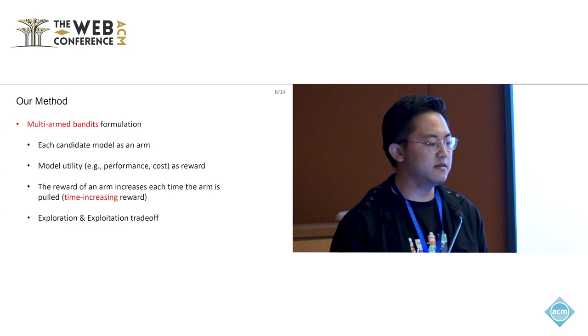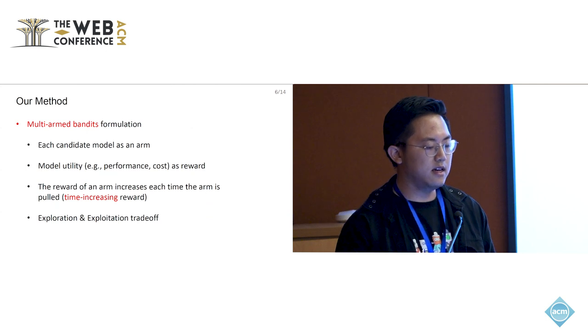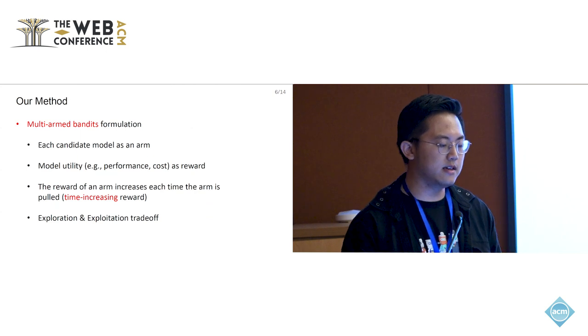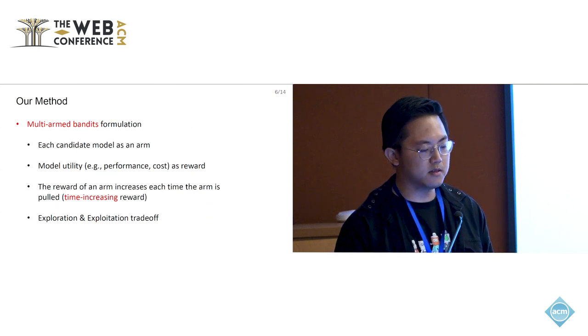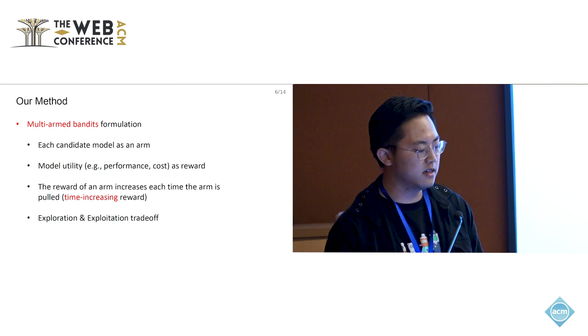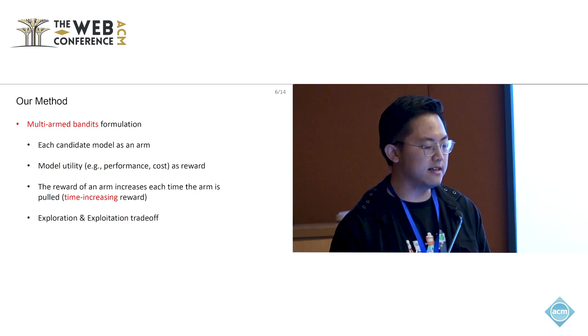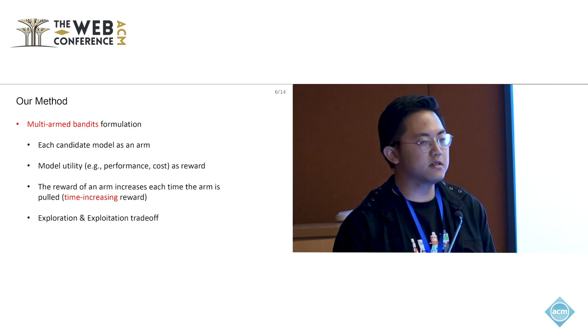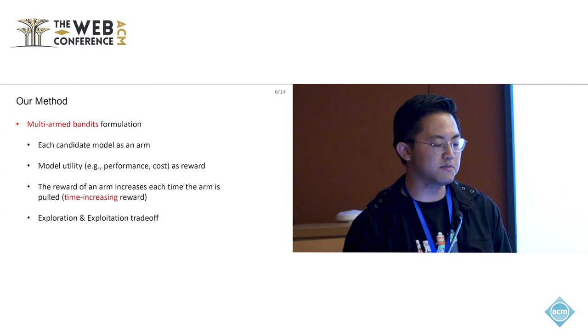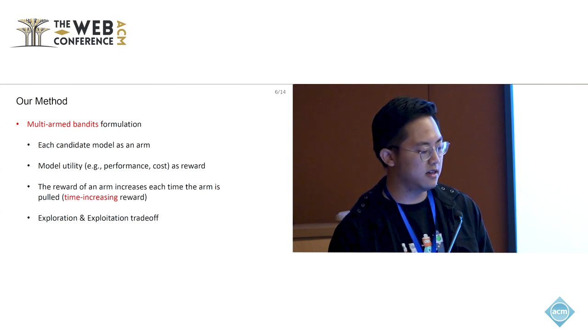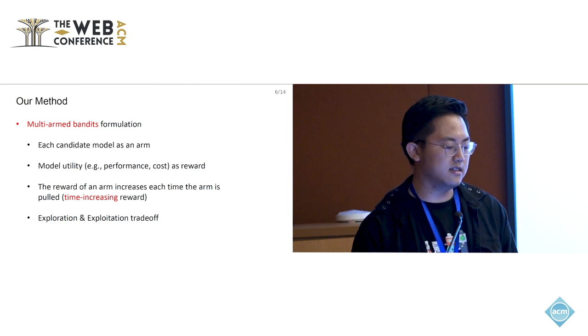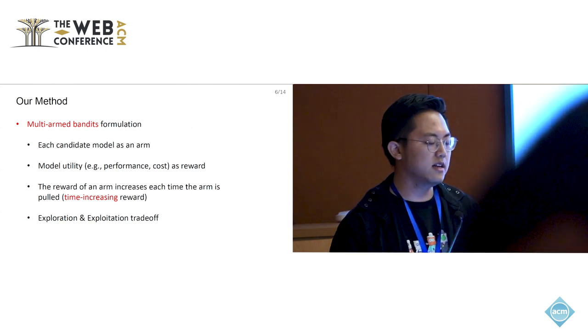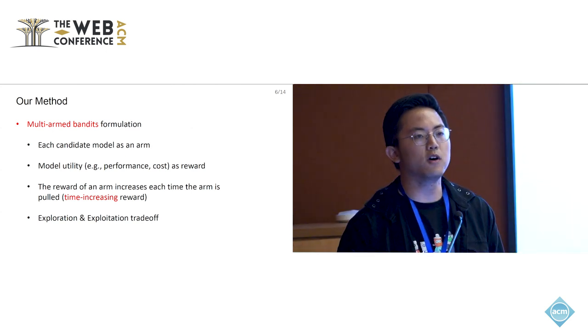We formulate this problem using a multi-armed bandit, which is a classic reinforcement learning formulation. We consider each candidate model as an arm, and model utility, for example, the model performance and fine-tuning cost, as a reward. We propose a non-stationary setting where the reward of an arm increases each time the arm is pulled, which corresponds to the model performance increases each time this model is selected and then fine-tuned. We want to balance the exploration and exploitation so that we can potentially explore the best model even if it is low-performing at the beginning stage.